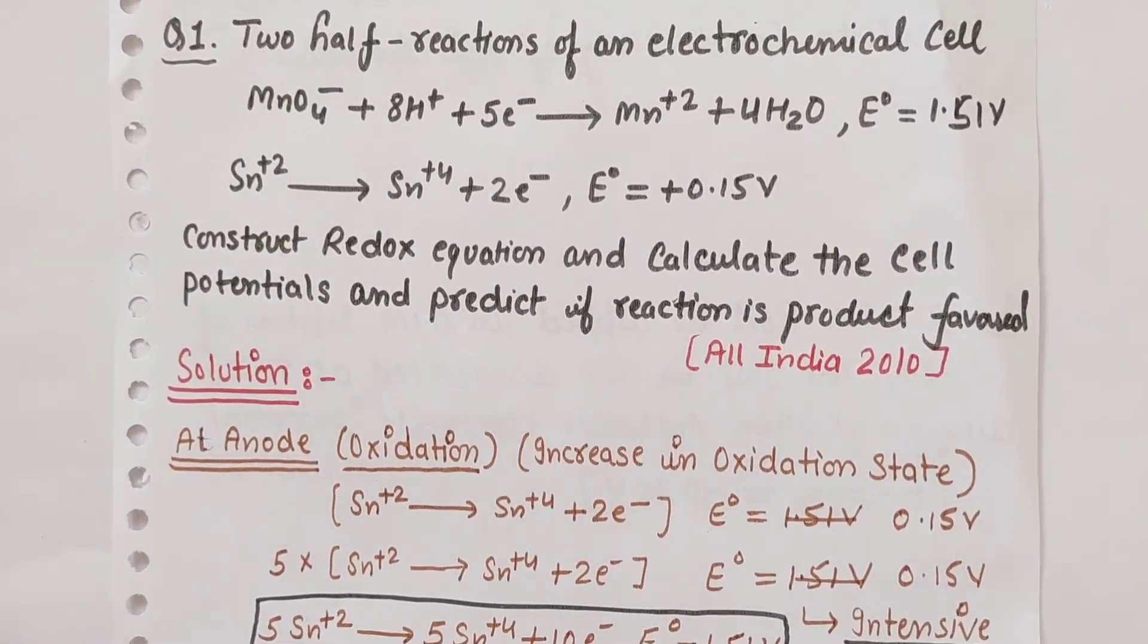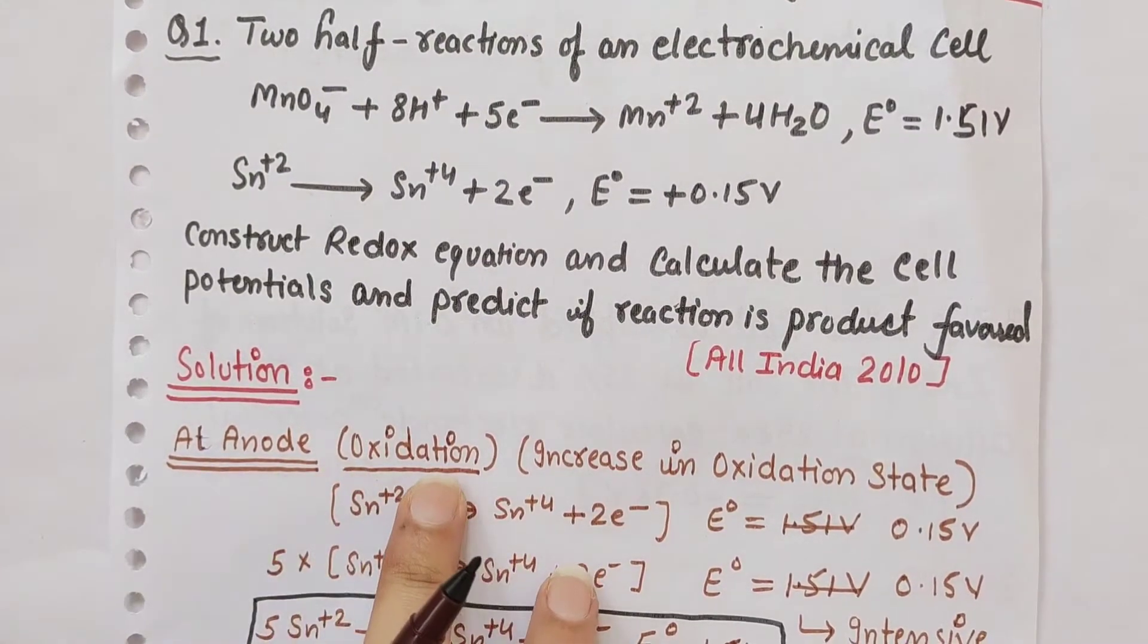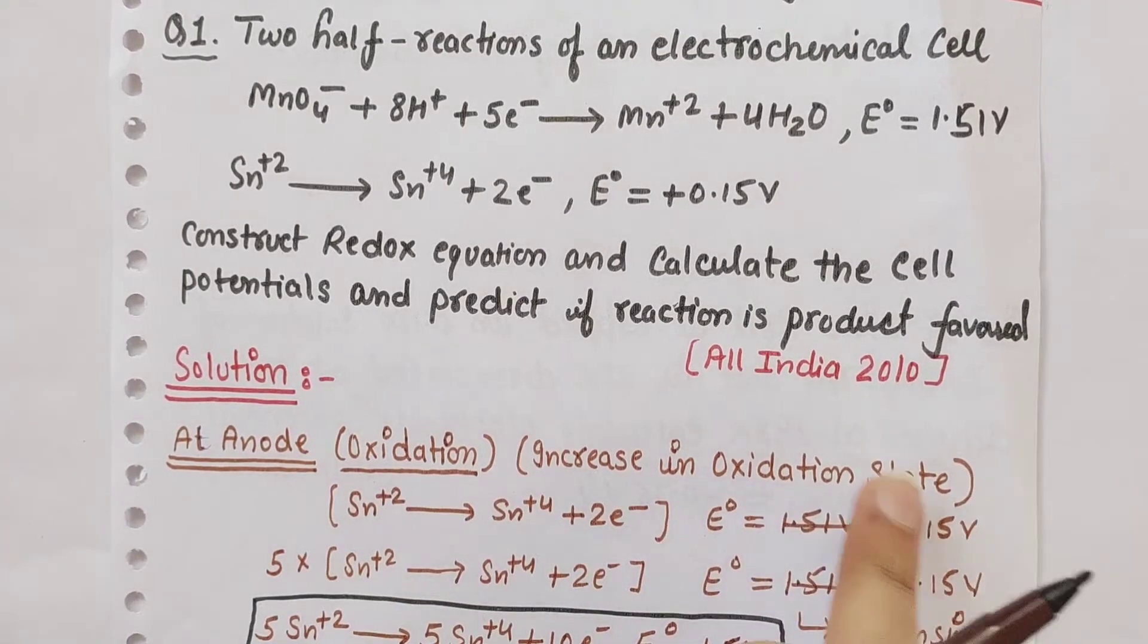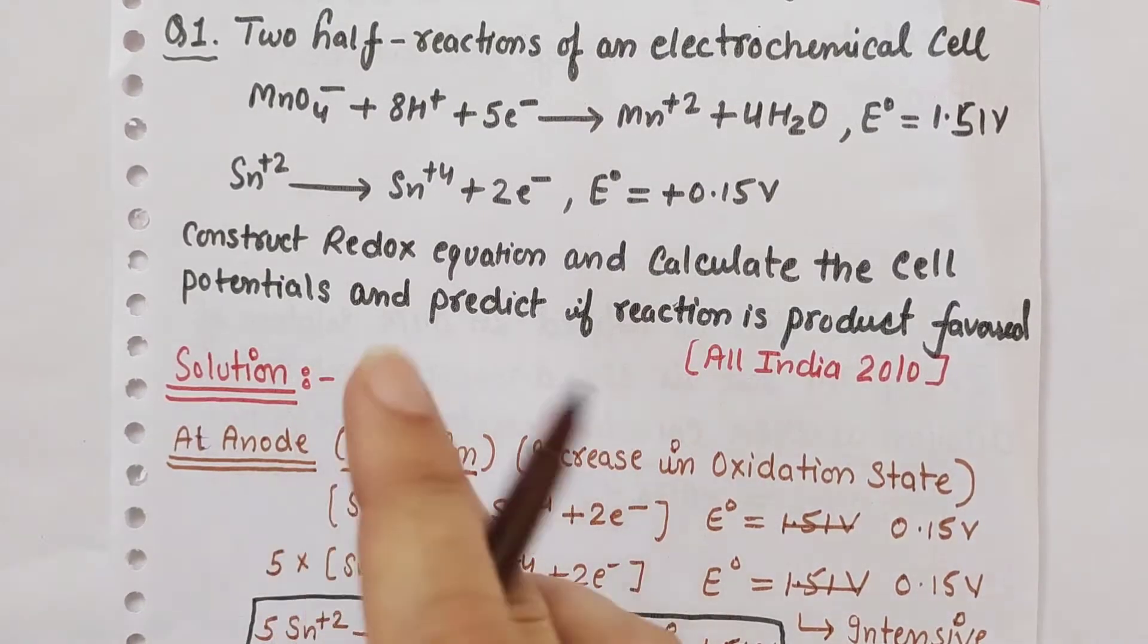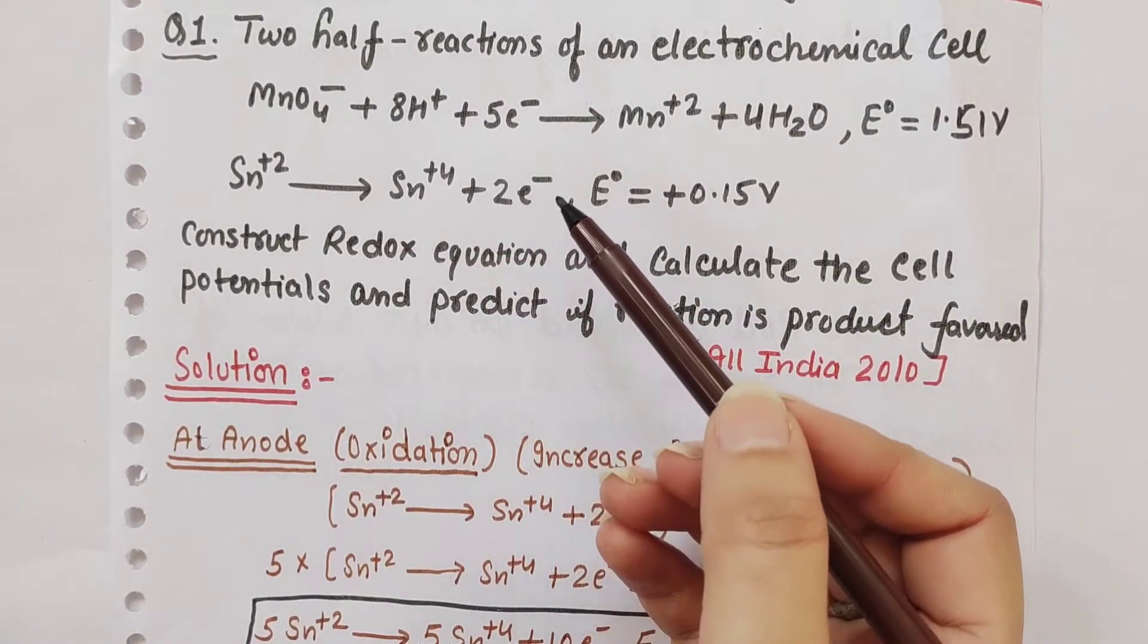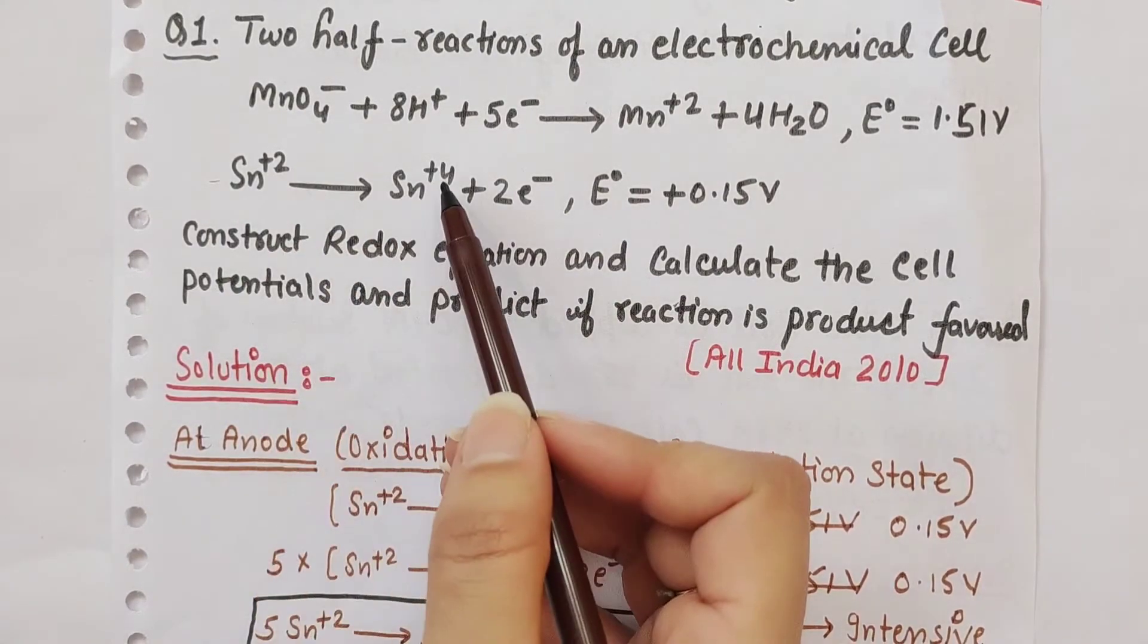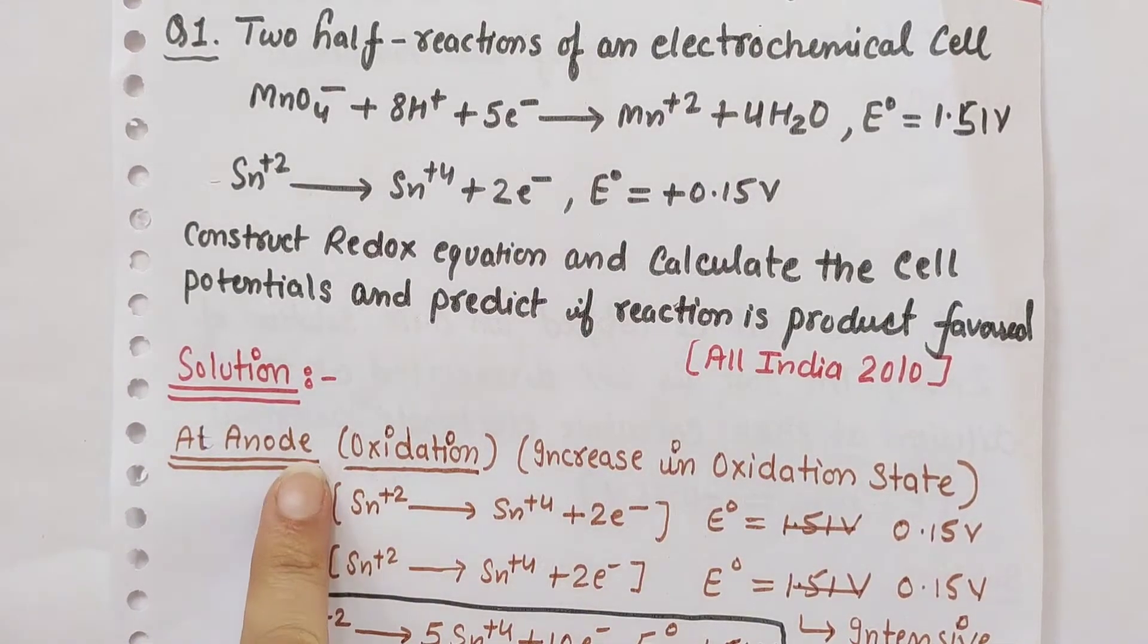To solve this type of question, we first need to identify which equation goes at the anode and which at the cathode. Anode is where oxidation occurs - oxidation means increase in oxidation state or loss of electrons. Among these two equations, loss of electrons is happening where Sn²⁺ goes to Sn⁴⁺ and 2 electrons are released. So this equation will be at the anode.